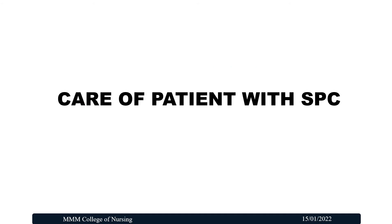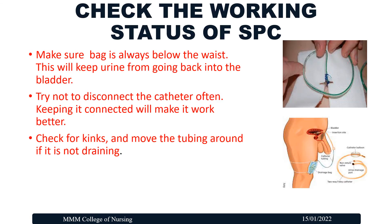How do we care for a patient with SPC? Before starting care, first we need to check the working status of the SPC. Make sure the bag is always kept below the waist — this will prevent urine from going back into the bladder, as gravity will keep it flowing downward. Second, try not to disconnect the catheter often, as keeping it connected will make it work better. Third, check for kinks and move the tubing around if it is not draining.